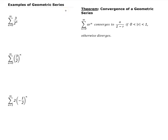In this lesson, we are going to look at a few examples of geometric series and determine whether they diverge or converge. For the first one, we have the summation of 3 over 2 to the n, going from 0 to infinity.